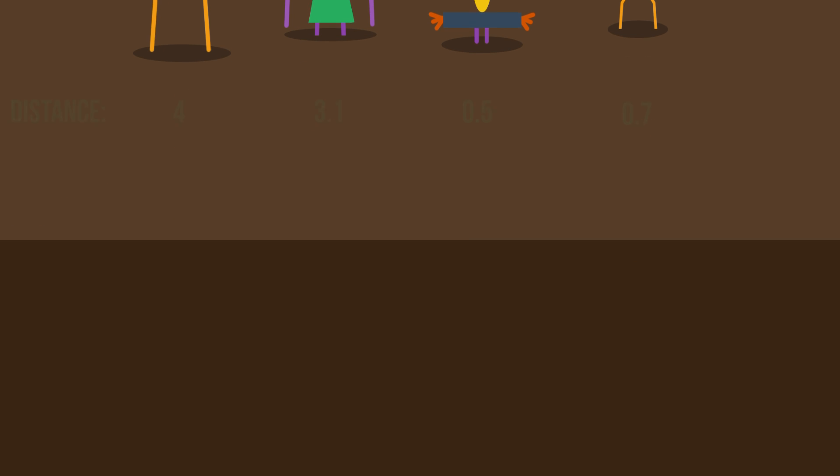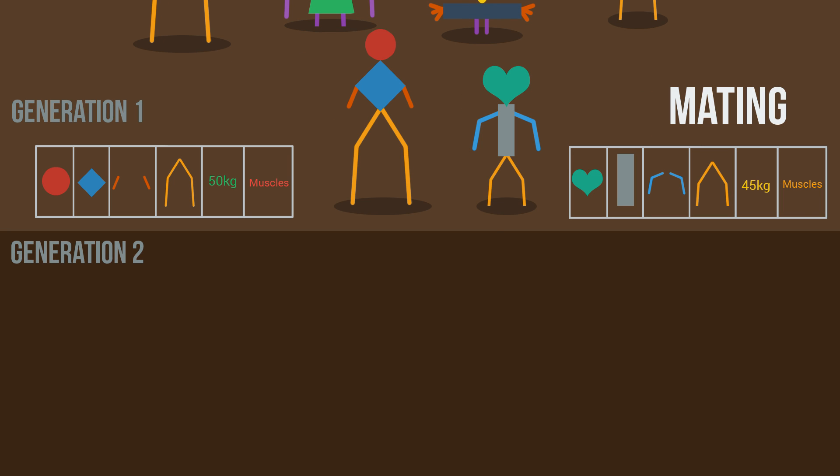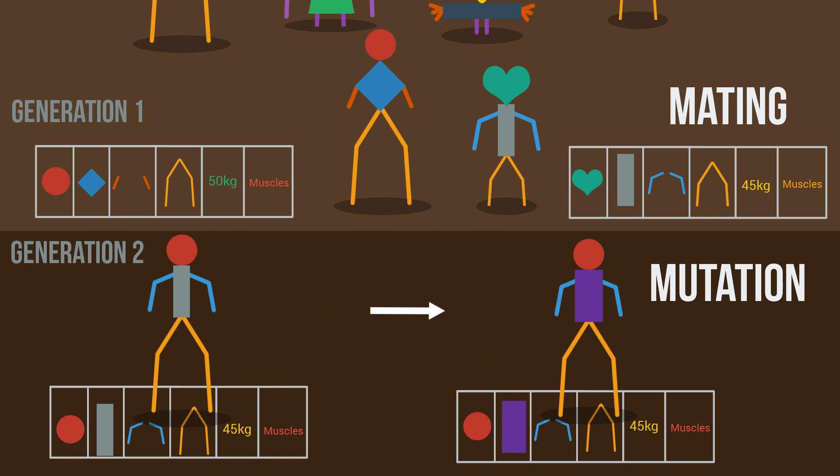We then randomly select two creatures that perform well, generating a new creature. In the mating process, the child gets some characteristics from one parent and some from the other. A random mutation occurs, which slightly changes some of these characteristics.